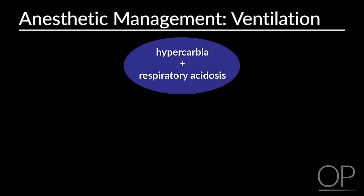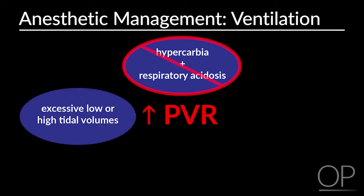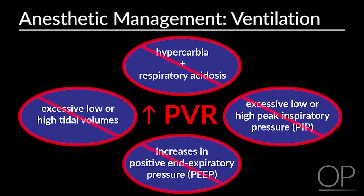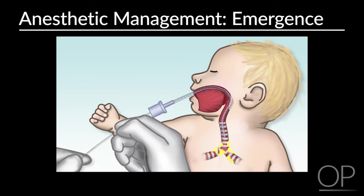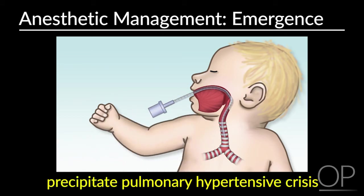For ventilation, it is very important to avoid hypercarbia and respiratory acidosis, which increase pulmonary vascular resistance. Also avoid excessively low or high tidal volumes, excessive low or high peak inspiratory pressures, and increases in PEEP — all of which can increase pulmonary vascular resistance. During emergence, minimize noxious stimuli. Suctioning the endotracheal tube or oropharynx should be done under deep anesthesia, as tracheal and oropharyngeal suction are known to precipitate an acute pulmonary hypertensive crisis.